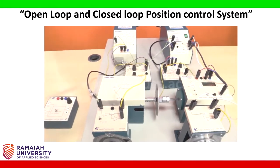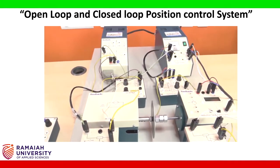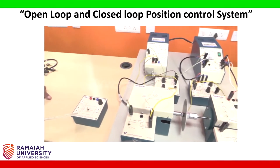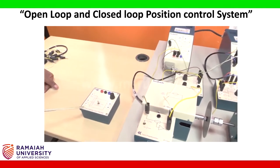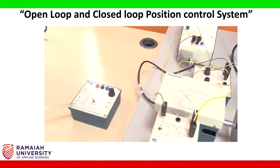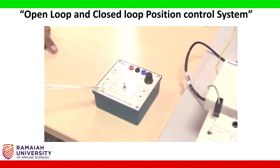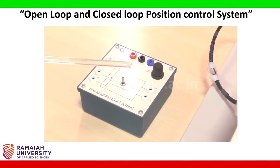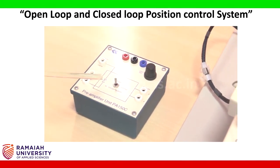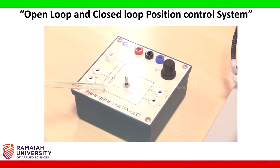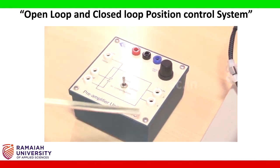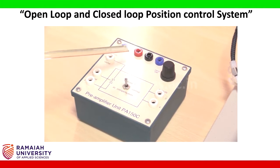For the closed loop system, we are adding an important unit: the pre-amplifier unit PA-150C. This is used for compensation — the offset observed in the open loop can be removed using this compensatory circuit. The pre-amplifier has plus 15, ground, and minus 15 terminals for supply.